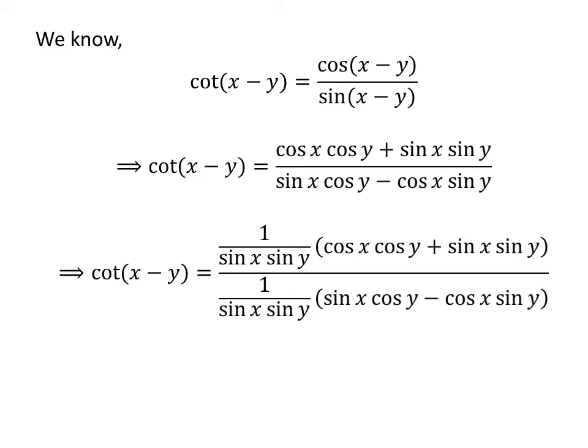As multiplying the numerator and the denominator of a fraction by a common factor does not change the value of the fraction, let us multiply the numerator and the denominator of the above fraction by 1 upon sine of x times sine of y.